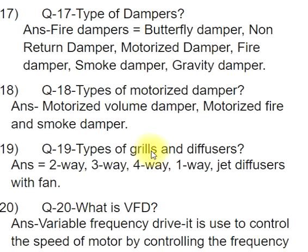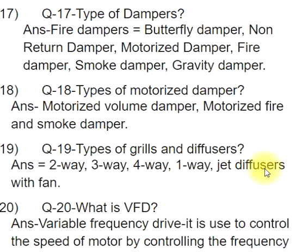Q19: Types of grills and diffusers. ANS: 2-way, 3-way, 4-way, 1-way, and jet diffusers with fan.